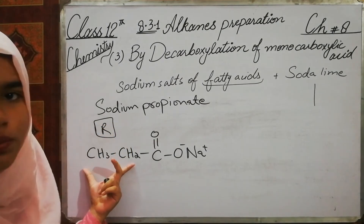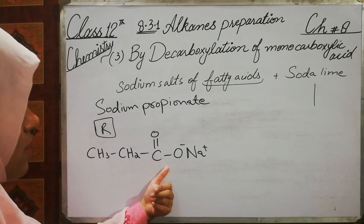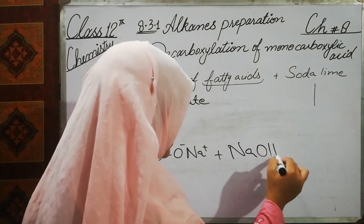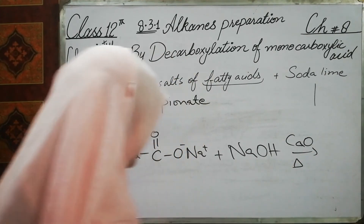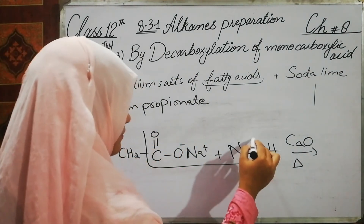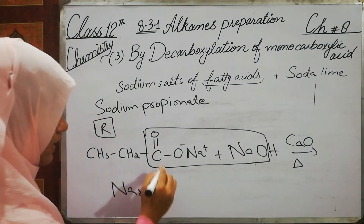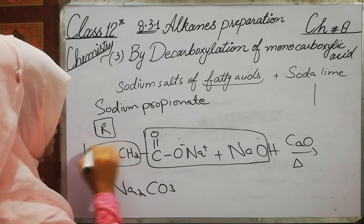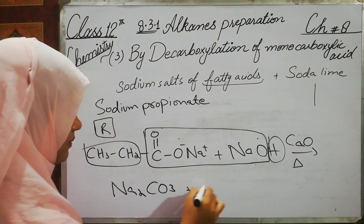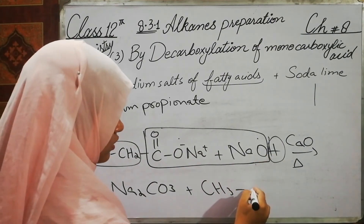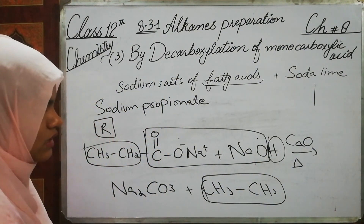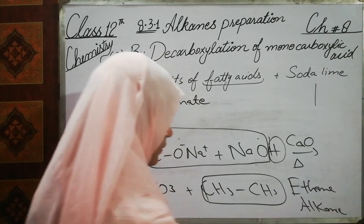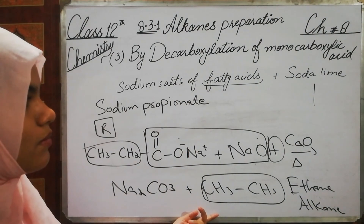We have an alkane group and we attach the ethyl group — CH3 and CH2 — to the sodium salt. We then react with Na2 and sodium hydroxide, apply temperature, and the result is Na2CO3 plus CH3CH3, giving us ethane by decarboxylation of monocarboxylic acid.